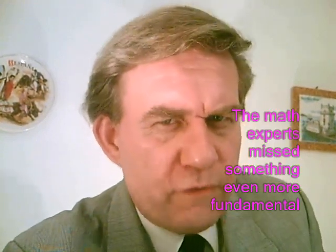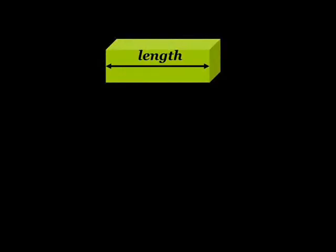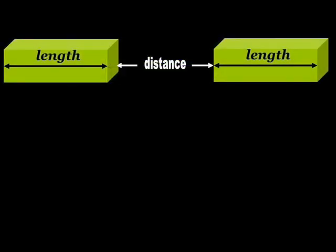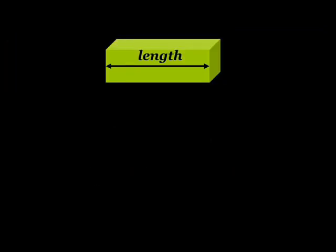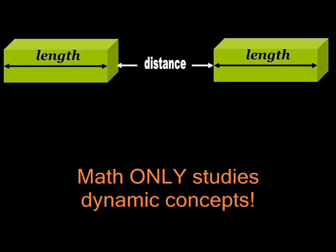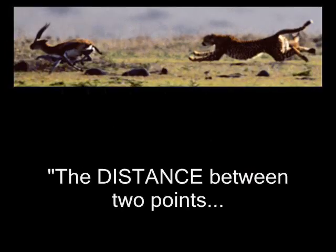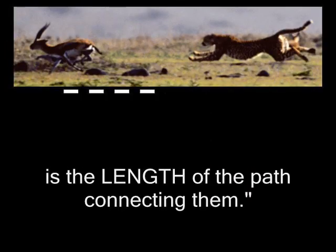But if our mathematicians fail to notice that there is a qualitative difference between length and distance, they fail to notice something even more fundamental. The mathematicians are alluding to neither the length of an object nor to the distance between two of them. A mathematician has no use for static concepts such as length or distance. Mathematics is exclusively a discipline that studies dynamic concepts. The distance between two points is the length of the path connecting them.